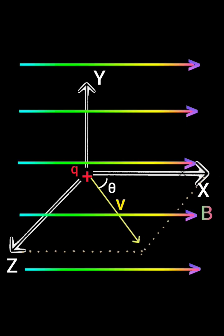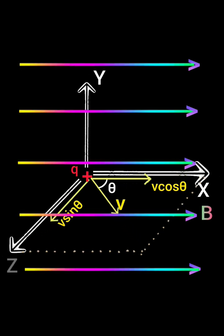The velocity can be divided into two mutually perpendicular components: v cos theta along x-direction and v sin theta along z-direction.